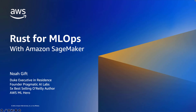Rust for ML Ops with Amazon SageMaker. My name is Noah Gift, and I'm a Duke executive in residence. I'm also the founder of Pragmatic AI Labs and a five-time bestselling O'Reilly author, and an AWS ML hero.